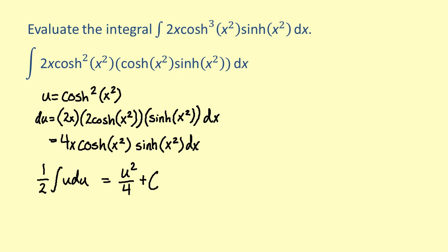Finally, substituting the hyperbolic cosine of x squared for u, we get the hyperbolic cosine to the 4th of x squared over 4 plus c.